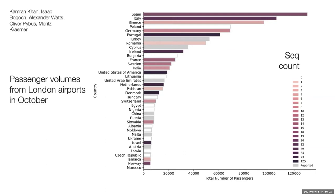We also have information about counts of passengers leaving London airports in October to give an idea of actual movement of people, which hopefully accounts a little for differences in genomic surveillance efforts between countries, since different countries are sequencing more intensely than others — the UK, for instance, is sequencing very intensely.